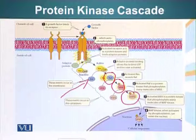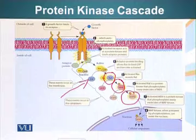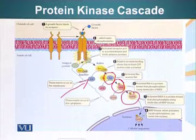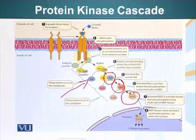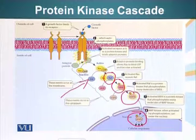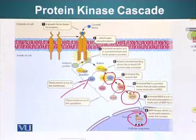One molecule receives a signal, it passes on that signal, and gives that information to another molecule. That molecule will basically generate several other molecules and will modify the function of several other molecules. So ultimately, activated MAPK enters the nucleus and activates genes that will cause cells to divide.